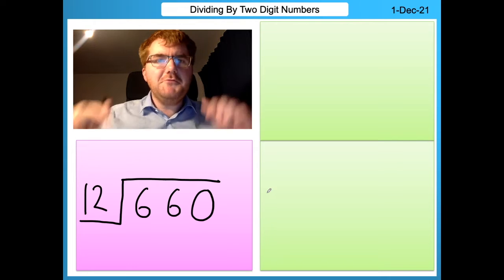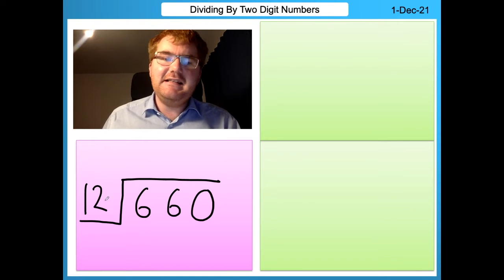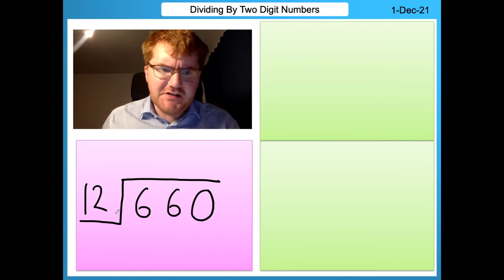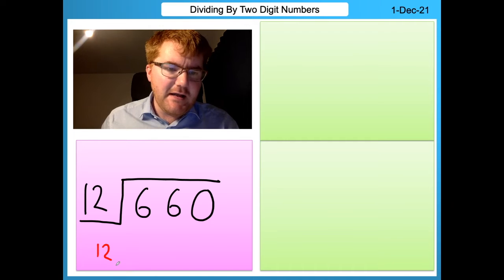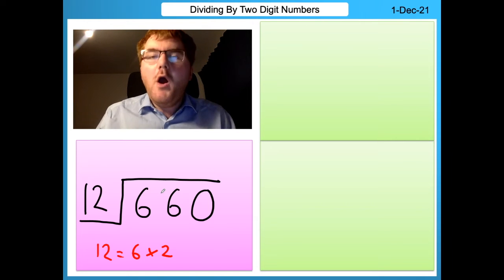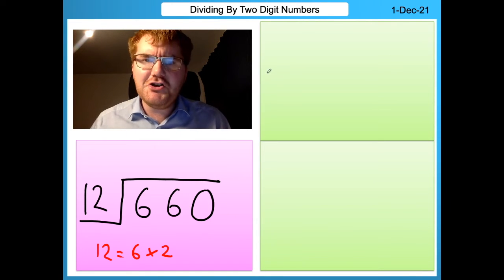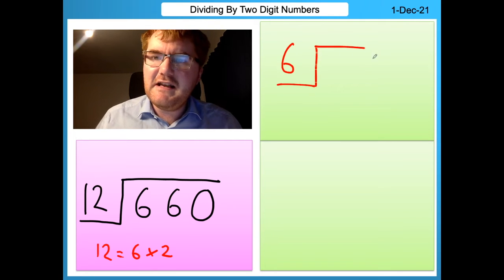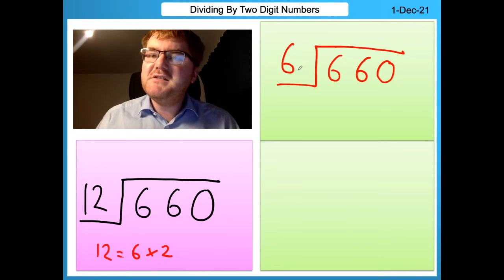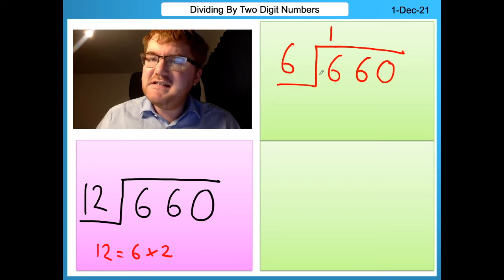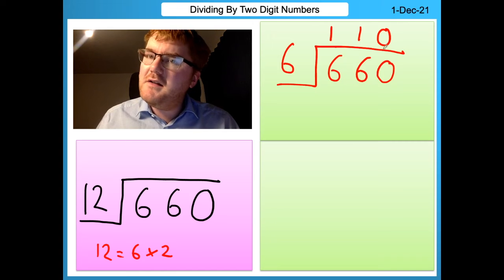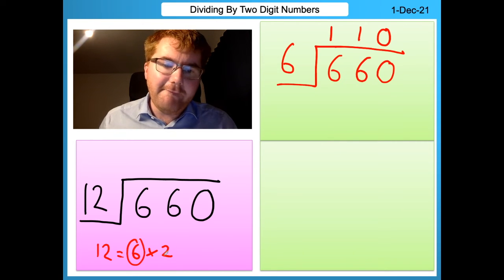OK, so you can see the original problem just below me here. So this was 660 divided by 12. And what we're going to do is this repeated division. So notice that 12 is actually the same as six times two. So rather than dividing by 12 and trying to do it in one go, we're going to split it into two very straightforward calculations. First of all, we're going to take that 660 and divide that by six. So we do that in the normal way. So six into six goes one. Six into six goes one. And don't forget our placeholder with the zero.